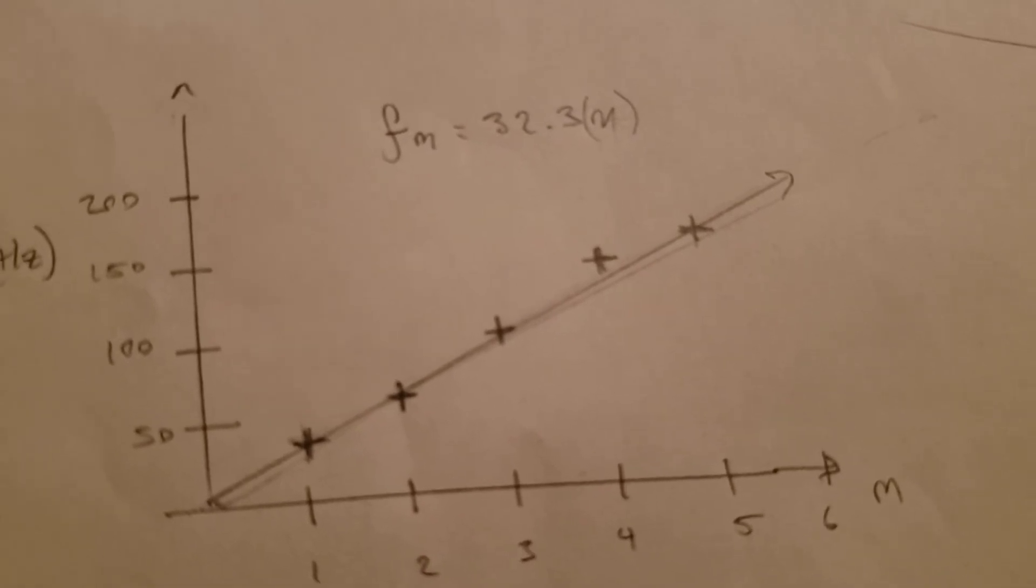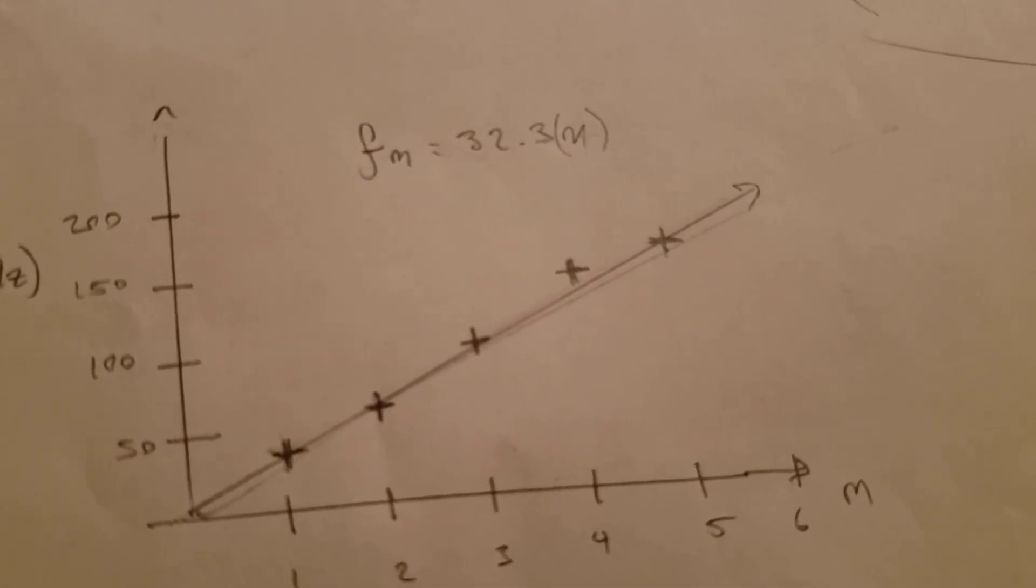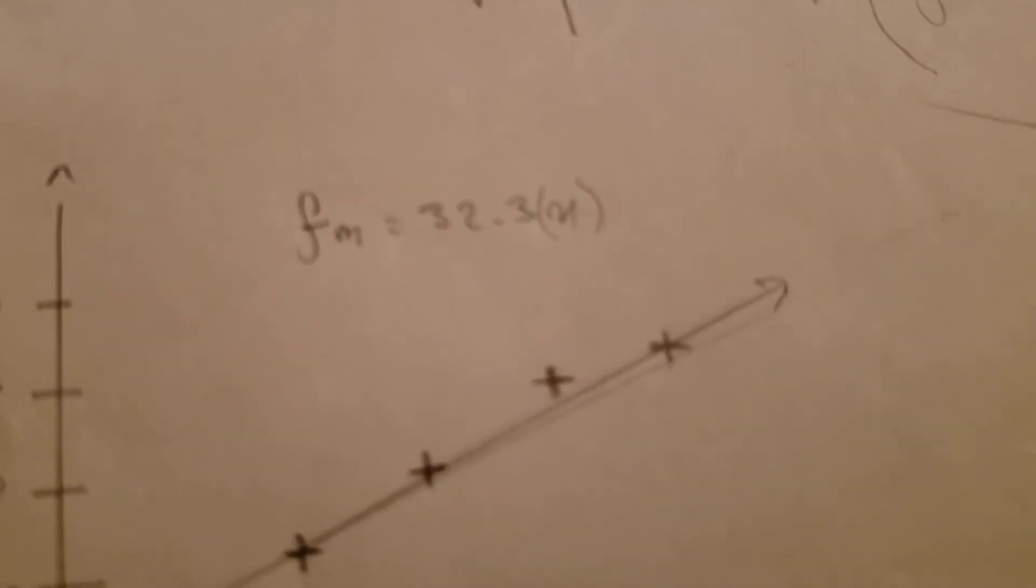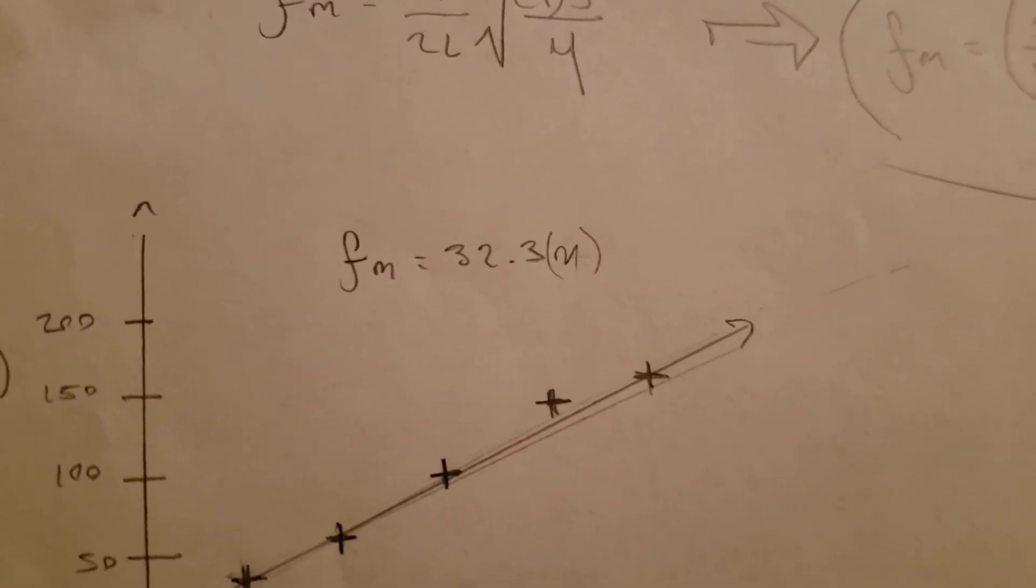And then, if you go ahead and gather the best fit by just taking the vertical component or the rise over the horizontal component over the run, you should get a slope of about 32.3. So, the equation of the line would thus then be, the frequency is equal to 32.3 times M.